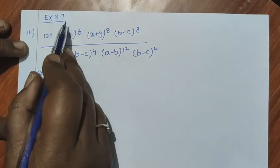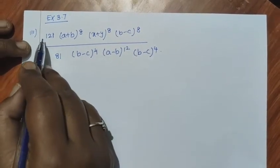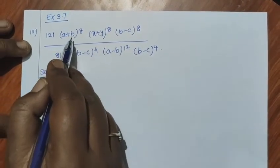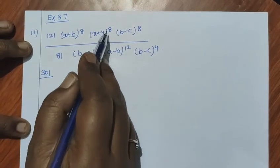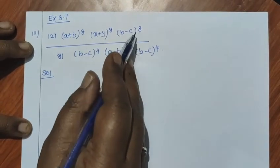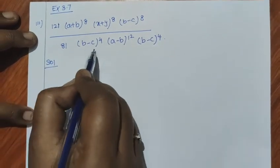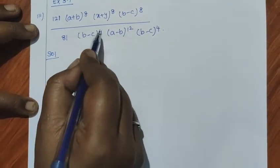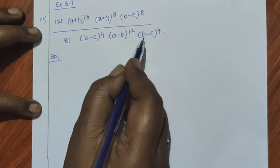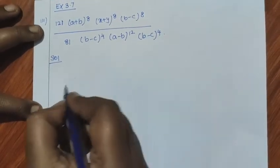Exercise 3.7, first row, third sum: 121 times (a plus b) whole power 8 times (x plus y) whole power 8 times (b minus c) whole power 8, divided by 81 times (b minus c) whole power 4 times (a minus b) whole power 12 times (b minus c) whole power 4.